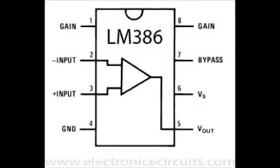we can see that the first and eighth pin is of gain. These two pins control the gain of IC. You can vary the gain of IC from 20 to 200.